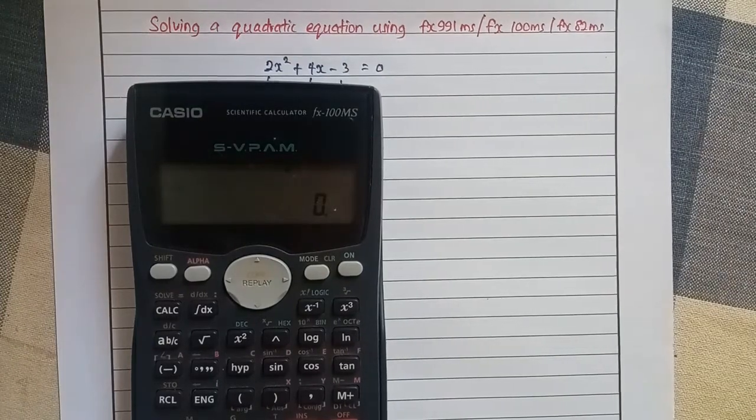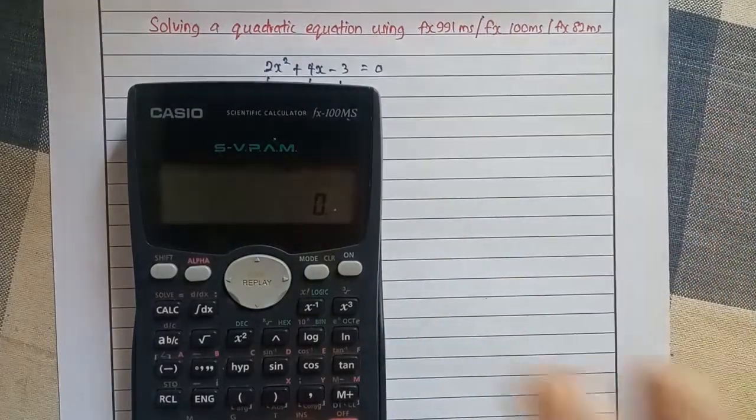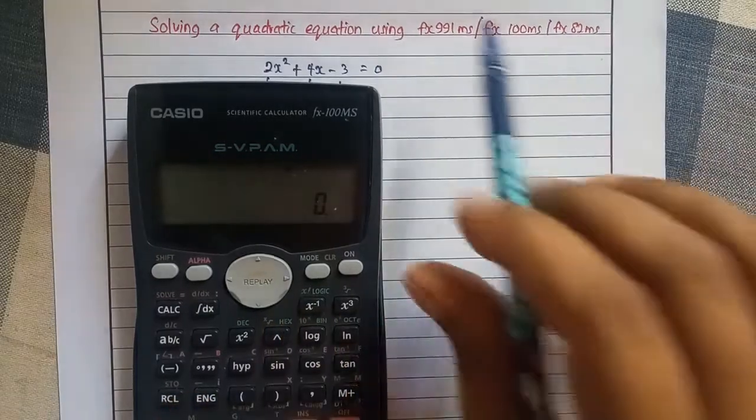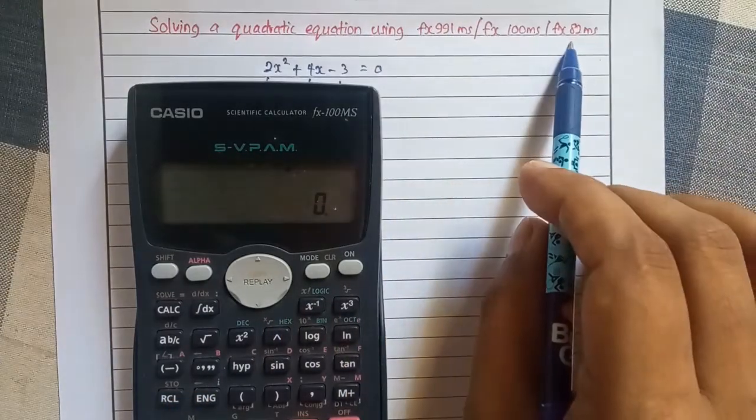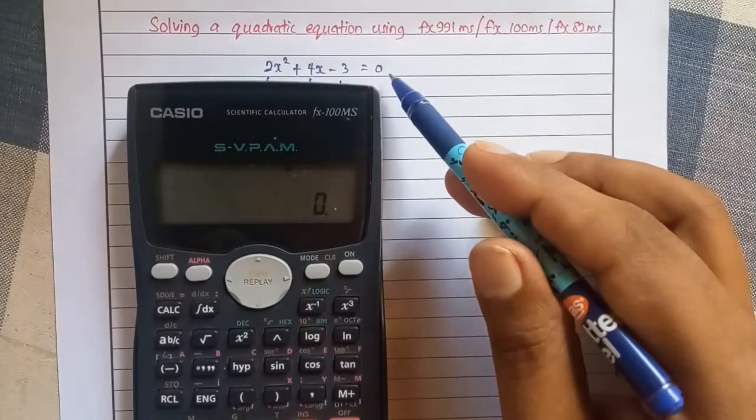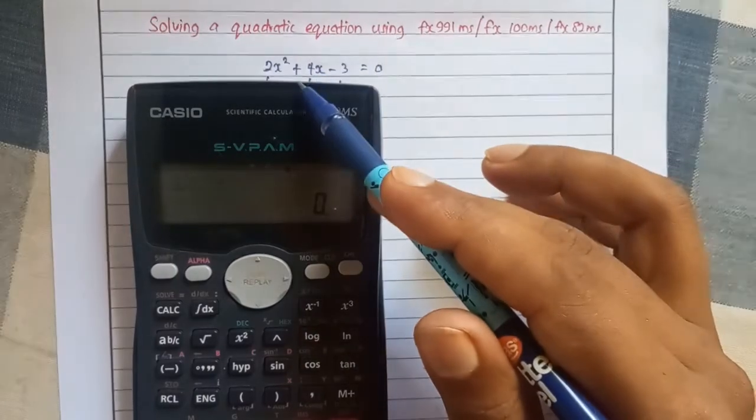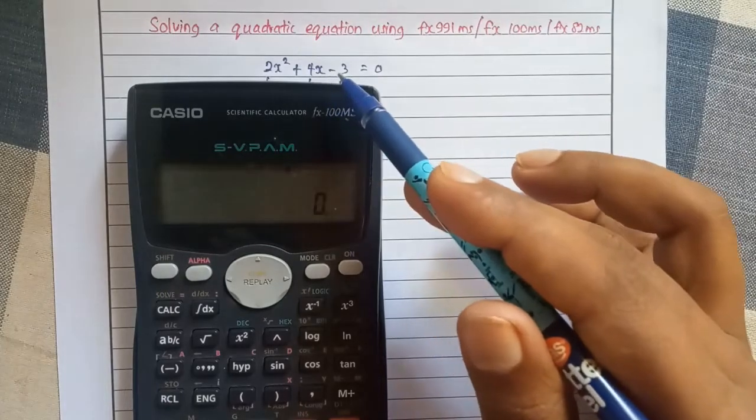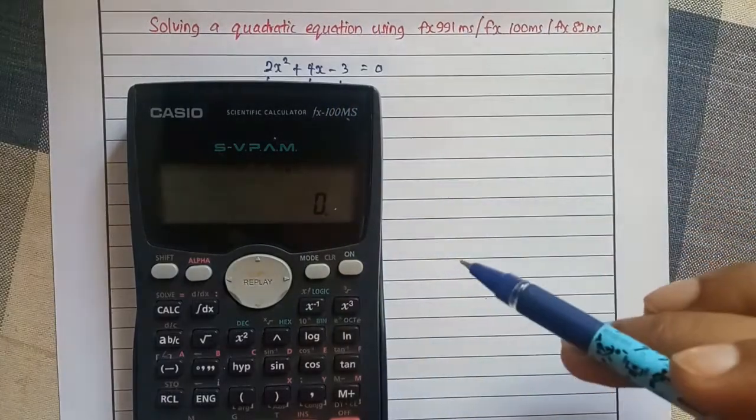Let's see how we can solve a quadratic equation using the scientific calculator of these mentioned versions. For this, I have written here a quadratic equation which is 2x squared plus 4x minus 3 equals 0.